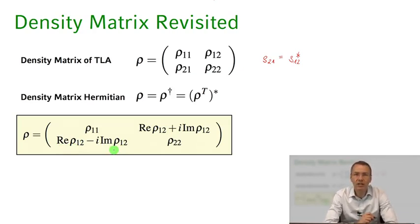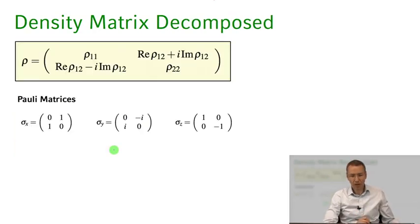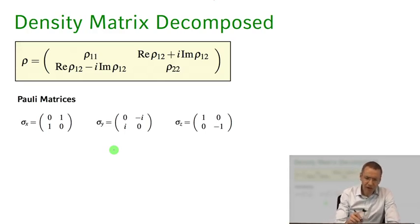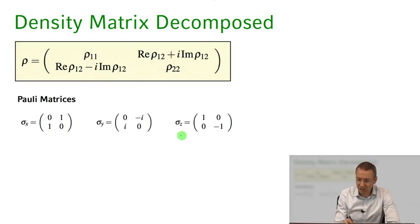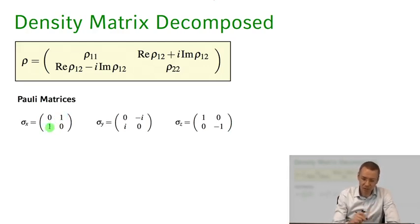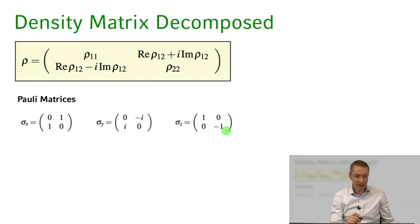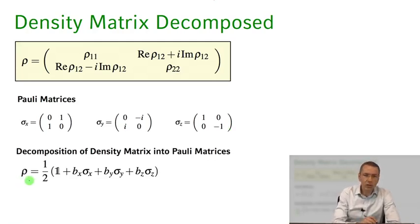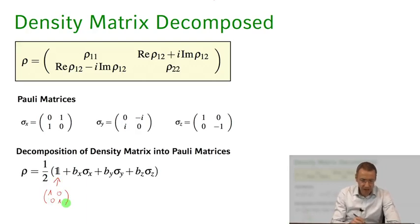We can write any general density matrix in this form for our two-level atom. When we look at the Pauli matrices from a spin-1/2 algebra, we get the idea that we might be able to decompose the density matrix in terms of the Pauli matrices. We have sigma-x, sigma-y, and sigma-z. Sigma-x would capture the real parts of the off-diagonal elements, sigma-y the imaginary parts, and sigma-z the populations on the diagonal. Indeed, any density matrix can be written as one-half times the unity matrix plus three real components bx, by, bz multiplied by sigma-x, sigma-y, sigma-z respectively.